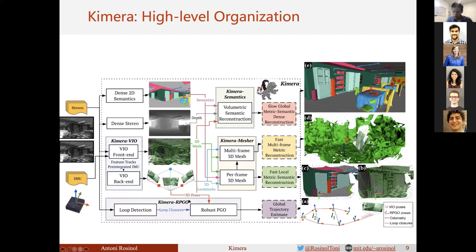At the bottom of the figure, we have Kimera-RPGO, which stands for Robust Pose Graph Optimization, and estimates a global trajectory of the drone by detecting loop closures. At the center, we have Kimera-Mesher, which builds the per-frame and multi-frame 3D meshes. At the top, we have Kimera-Semantics, which builds the global 3D metric semantic mesh shown here.